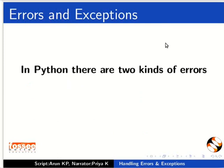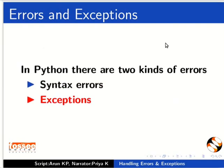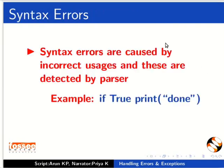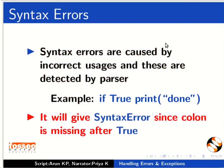In Python, there are two kinds of errors: Syntax Errors and Exceptions. Syntax Errors are caused by incorrect usages and these are detected by the parser. For example, if typing 'if true print("done")' it will give a Syntax Error since the colon is missing after true.